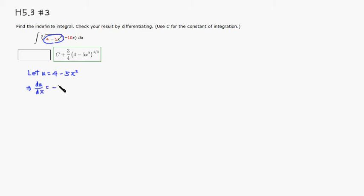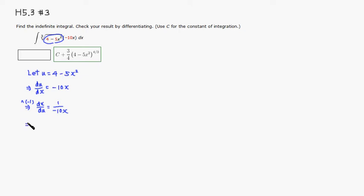We take the derivative of u with respect to x, which equals negative 10x. I'm going to solve for dx by taking the reciprocal of both sides to get dx/du, and the reciprocal of negative 10x is 1 over negative 10x.